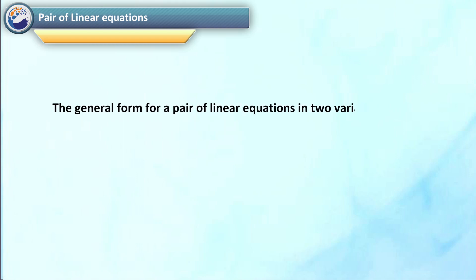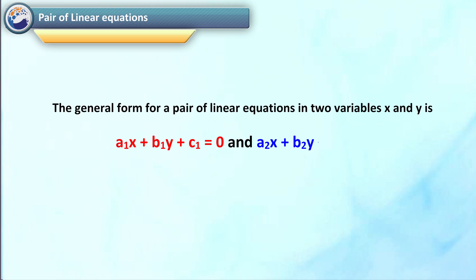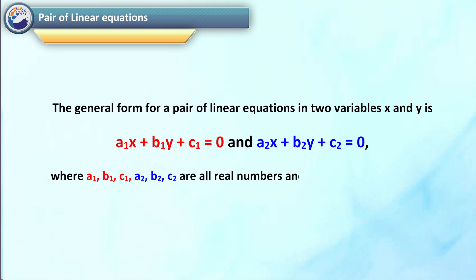The general form for a pair of linear equations in two variables x and y is: a1x plus b1y plus c1 is equal to 0, and a2x plus b2y plus c2 is equal to 0, where a1, b1, c1, a2, b2, c2 are all real numbers.